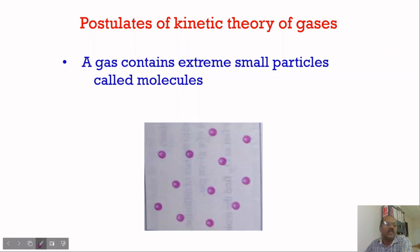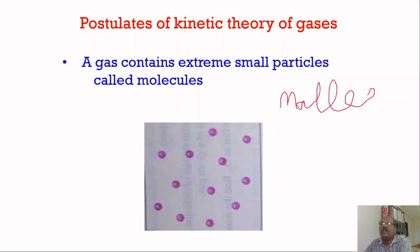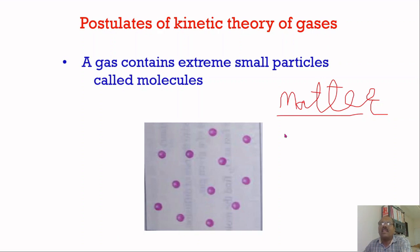Matter is a substance which occupies space and possesses mass. Anything around us is called matter. In science, matter is a substance which occupies some volume and has some mass. For example, a table, box, water, kerosene, petrol, or different gases — all these are matter.